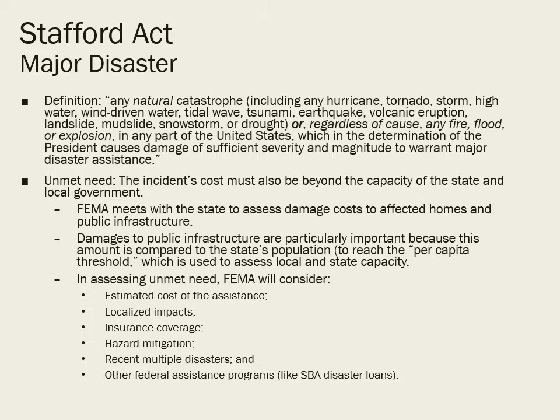The Stafford Act defines a major disaster as a natural catastrophe or — regardless of cause — a fire, flood, or explosion of sufficient severity and magnitude to warrant major disaster assistance, with an unmet need where the incident cost is beyond the capacity of state and local governments. FEMA assesses damage costs — meeting with the state to assess costs of damage to homes and public infrastructure — and basically looks at what the cost of damage to infrastructure is compared to the state population, then determines whether there is a sufficient unmet need to trigger federal assistance.